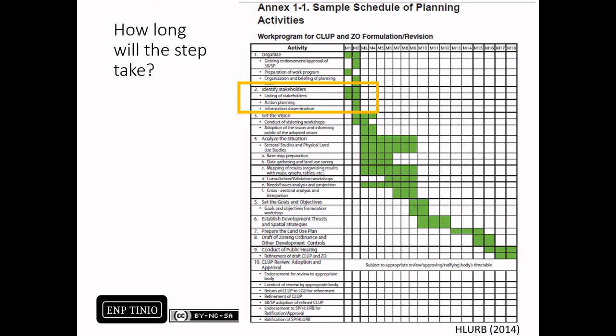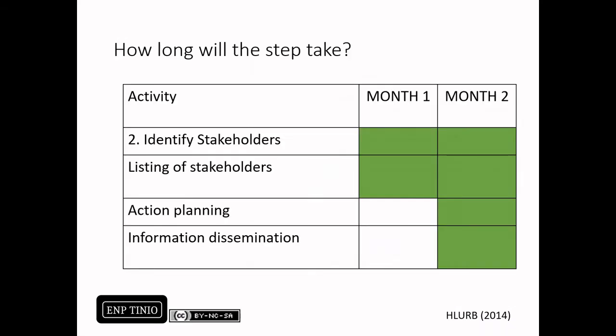How long will Step 2 take? Using the prescribed sample schedule of the HLURB guidebook, which outlines activities for CLUP formulation through Step 9 over 18 months, Step 2 is described as accomplishable in two months in conjunction with Step 1. In my opinion, it is important to use existing technical working groups and existing council compositions as the basis for the stakeholder list.